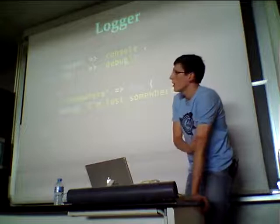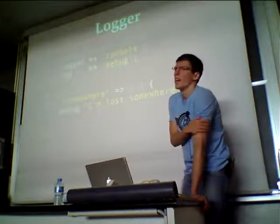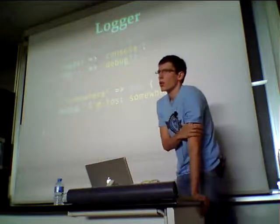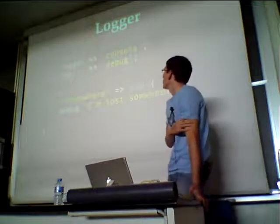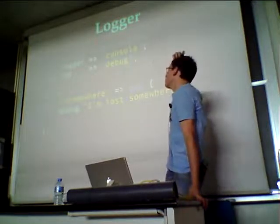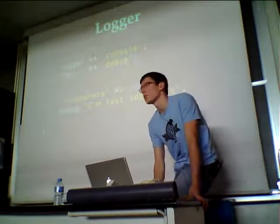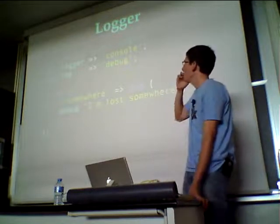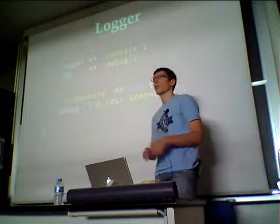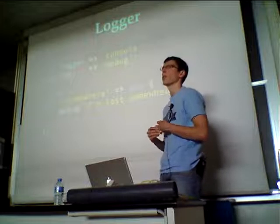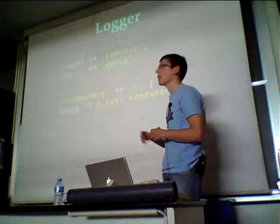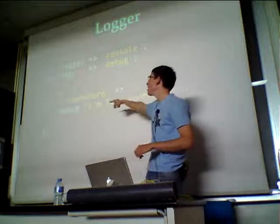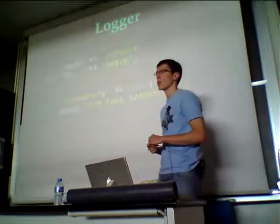Dancer comes with a logging facility. It works fine, though I'd like to rewrite it. You can choose to display logging in the console, in a file, or elsewhere. You can choose different logging levels — debug, error, warnings, and so on. You use it by directly calling the name of the level you want to log.